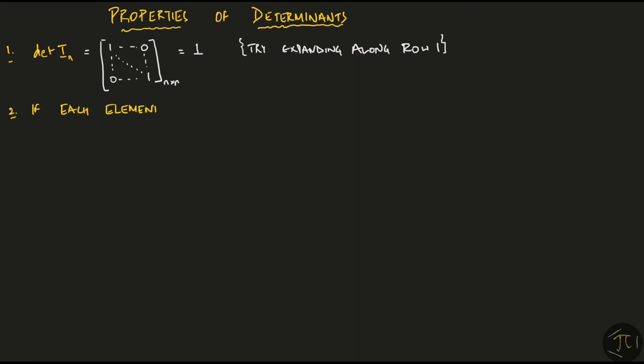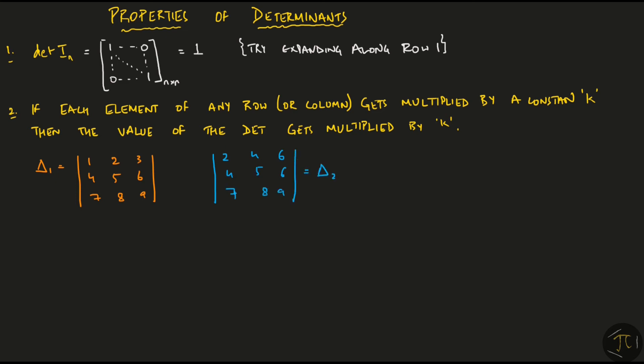Property number 2. If each element of any row or column gets multiplied by a constant k, then the value of the determinant gets multiplied by k. As an example, let me take this determinant delta1 that looks like this. And now look at this other determinant. The last two rows have the same elements but the first row of delta2 is 2 times of that of delta1. From the above property, we can conclude that delta2 is 2 times delta1 which means that we can pull out 2 from the first row of delta2.